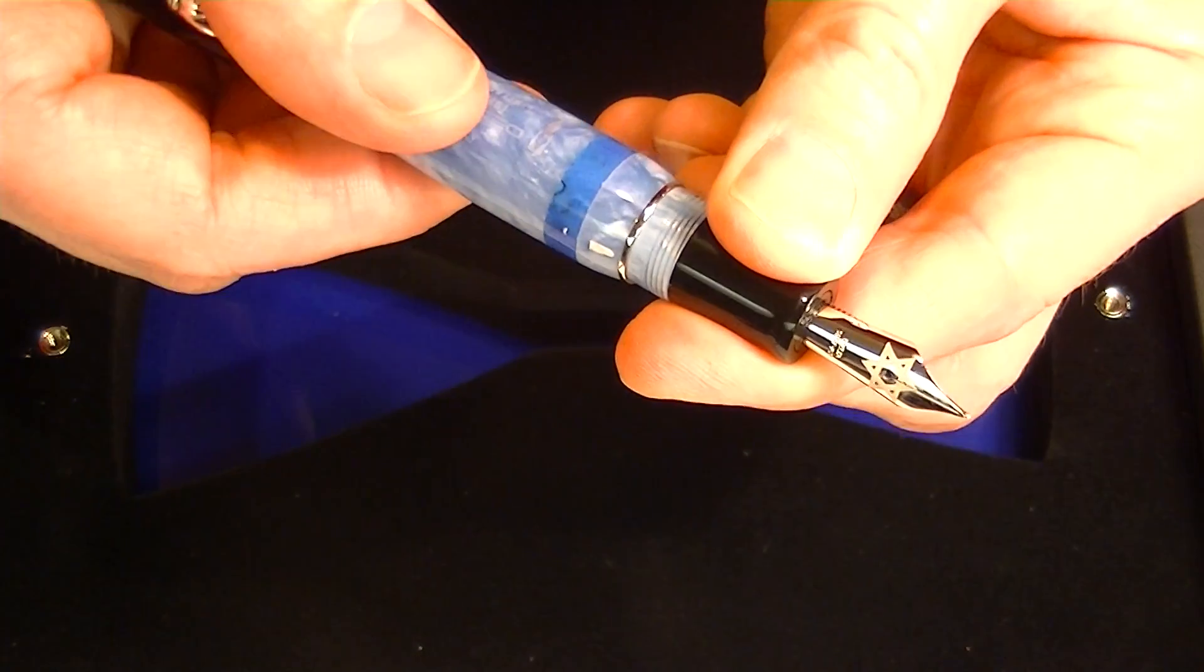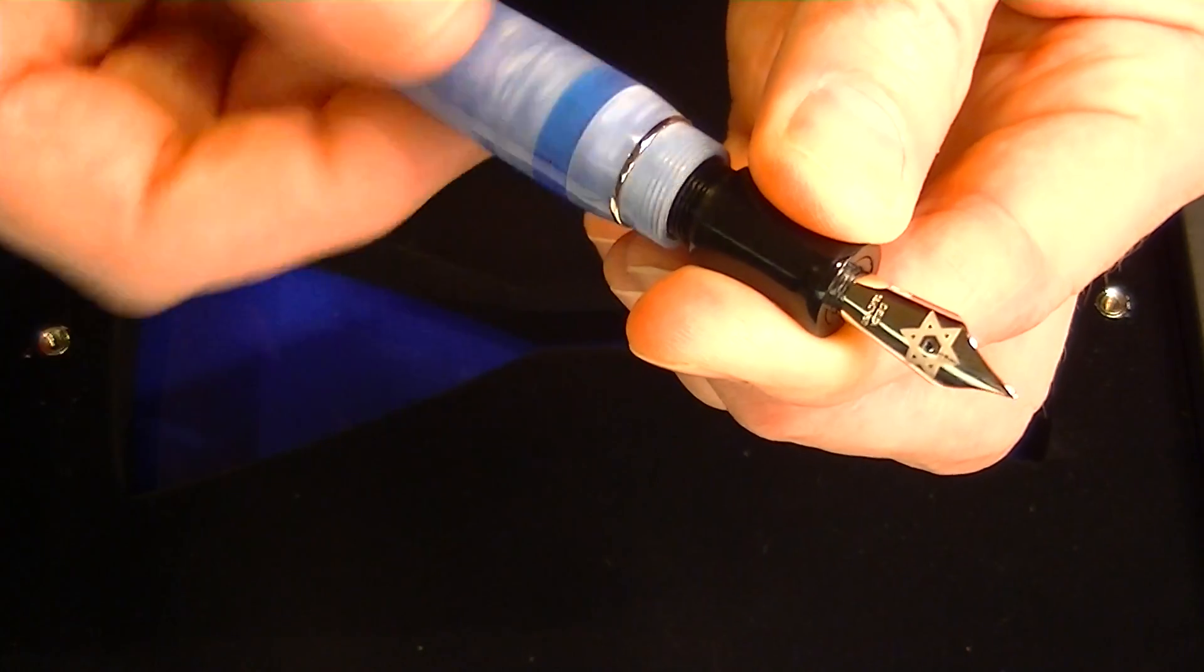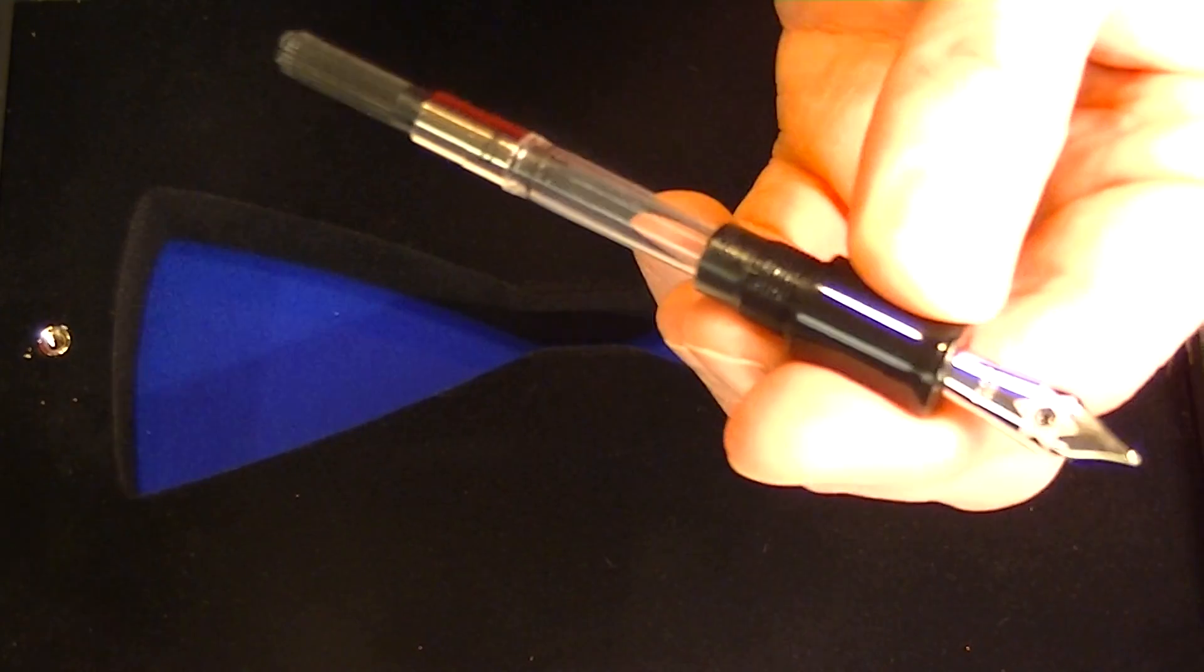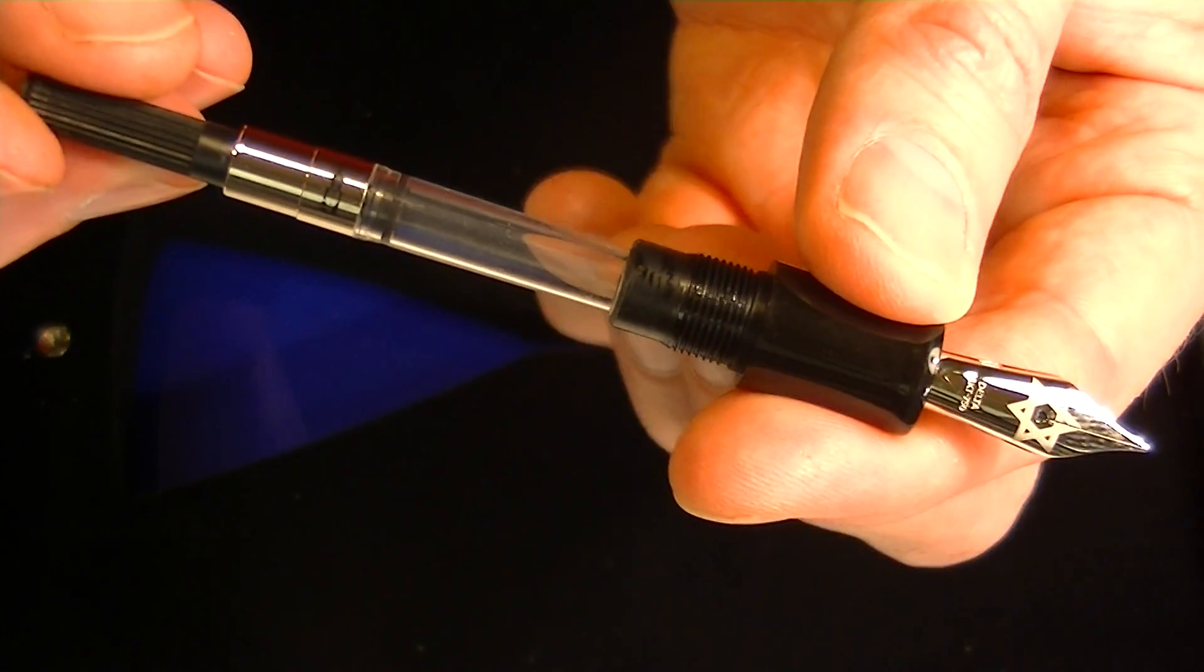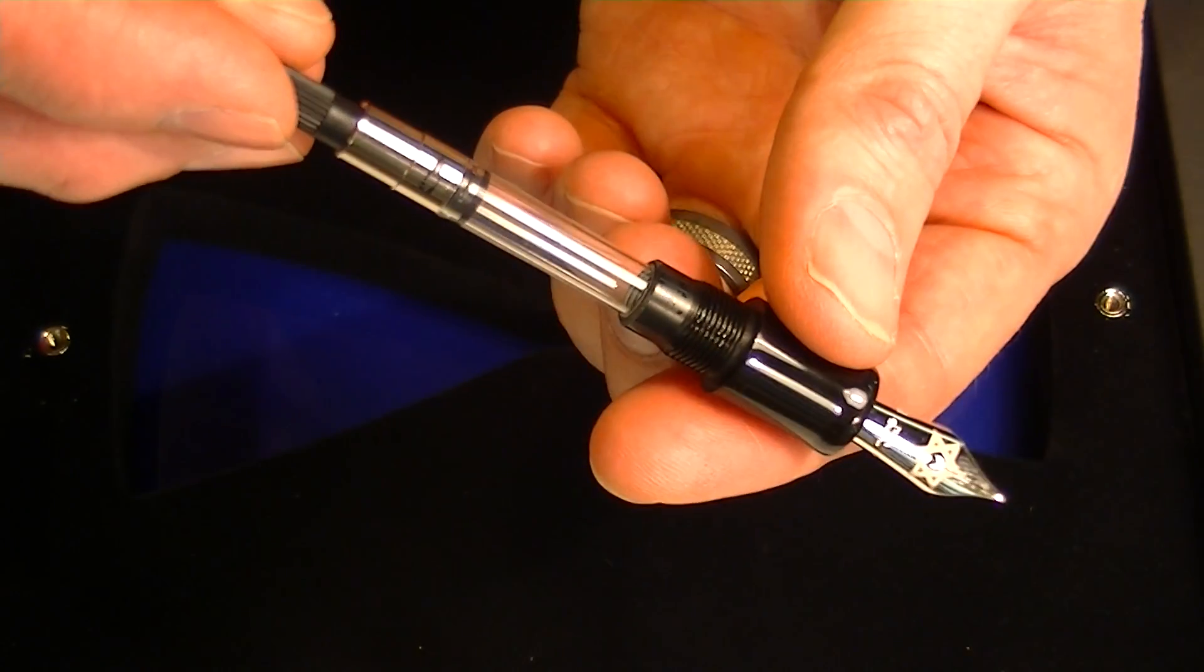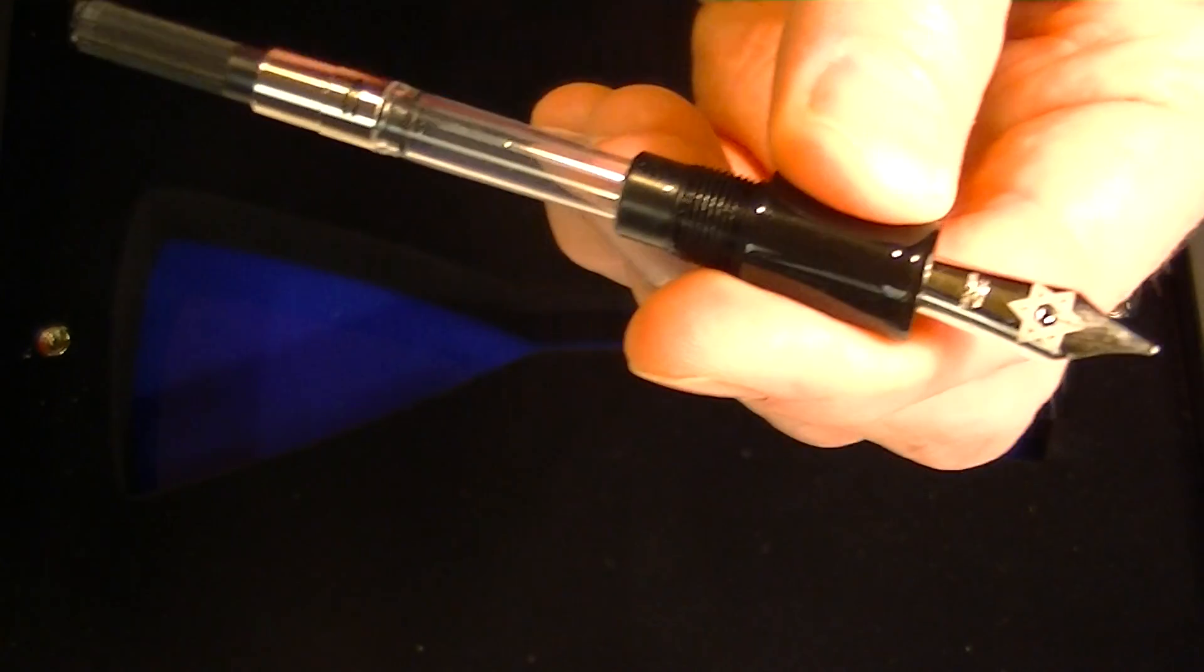This pen is a cartridge converter style pen. To change the cartridge or converter or add ink to the pen, we simply unscrew the nib section from the barrel. Included with the pen is an ink converter. Simply dip the nib into the bottle of ink and you can draw ink into the converter chamber.